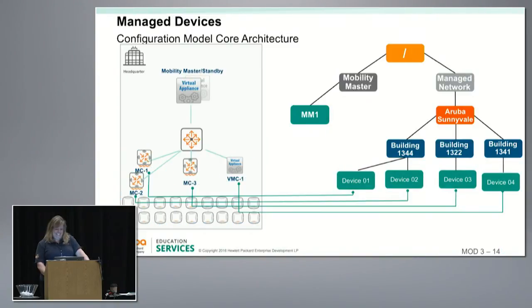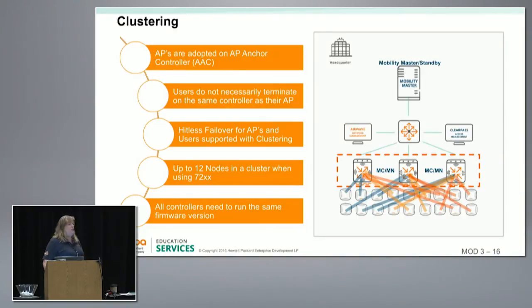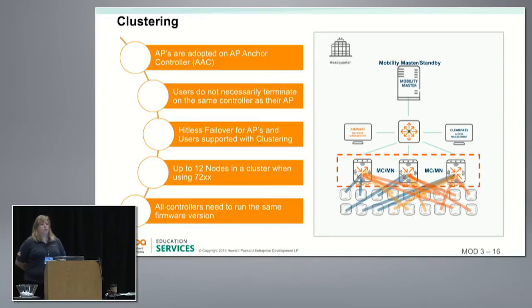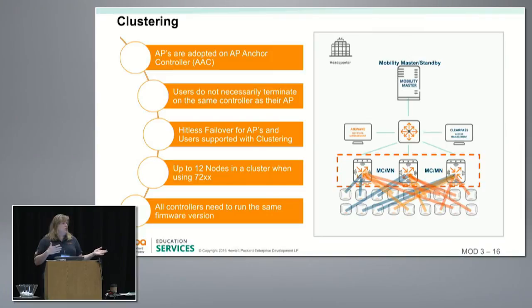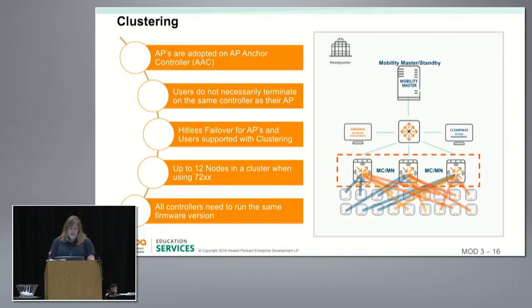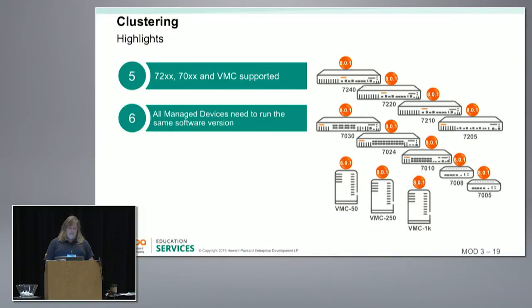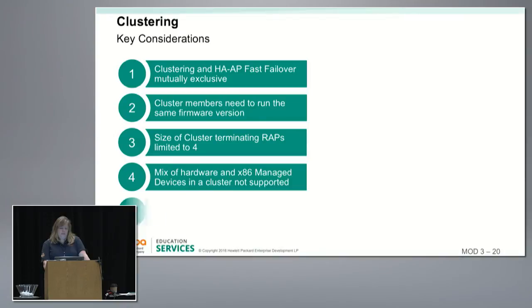The big AOS 8 feature is clustering. A quick overview: APs can build multiple tunnels to different controllers — they have a primary controller and a standby controller, and those tunnels are active. If we have a controller failure, we have something called hitless failover, which means all client session state, all firewall state, and high-value sessions are synchronized. If a controller fails, traffic simply moves from the AP to a different controller and it is completely seamless to the client and applications.